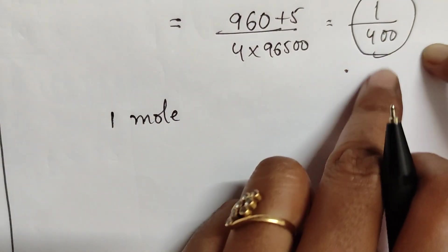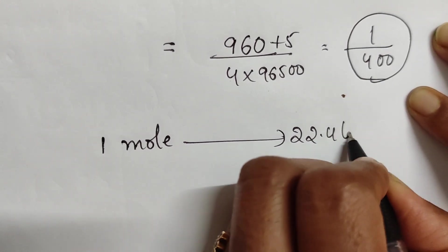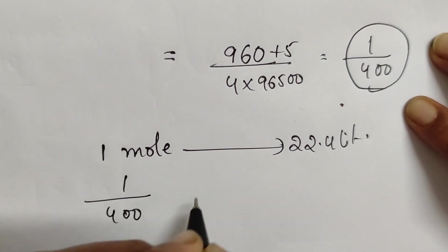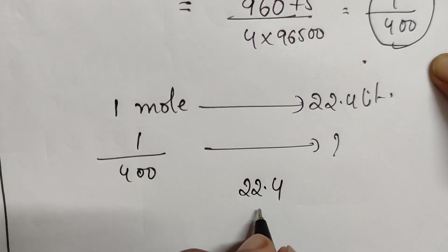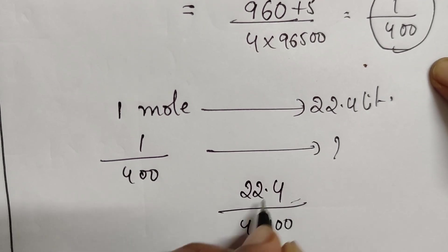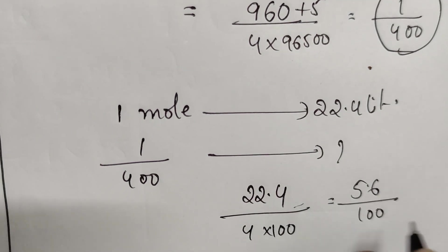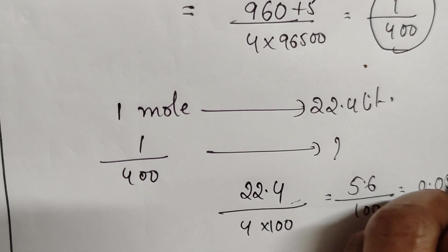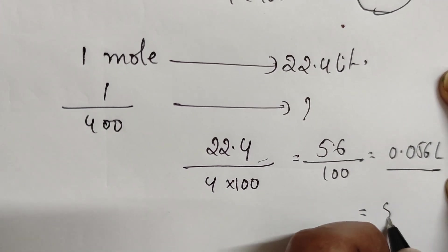We get 1 by 400. One mole is 22.4 liters. Then 1 by 400 mole is how much? Just do the cross multiplication: 22.4 by 4 times 100. 5.6 by 100 is 0.056 liter. Convert that into milliliters.